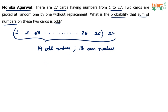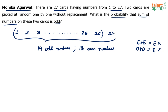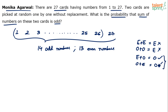When can the sum be odd? Even plus even is even — for example, 2 plus 4 is 6. Odd plus odd is also even — like 7 plus 3 is 10. These two cases are ruled out. But even plus odd is odd, and odd plus even is odd — for example, 5 plus 2 is 7. Whether you add even to odd or odd to even, both give the same result.